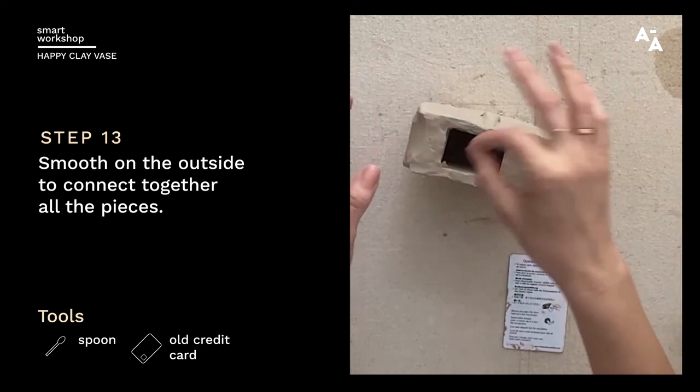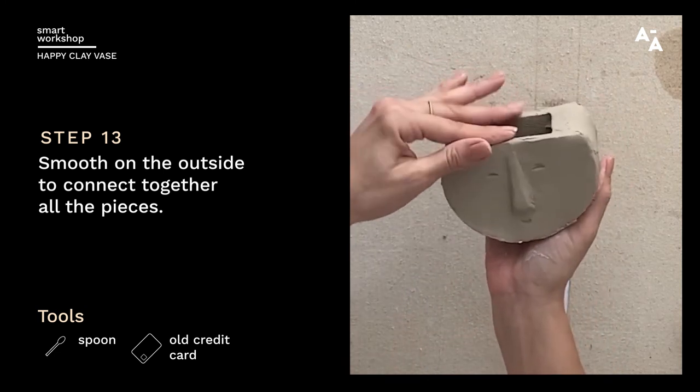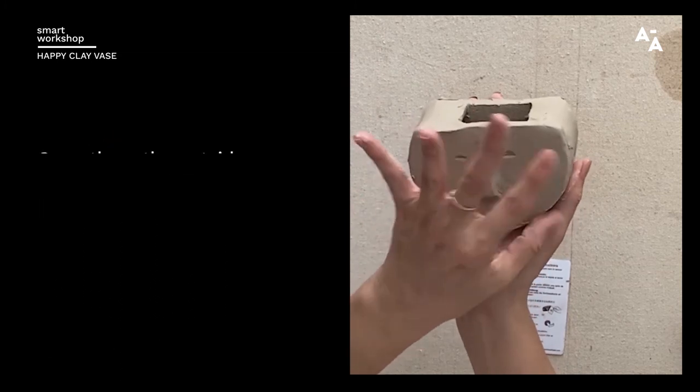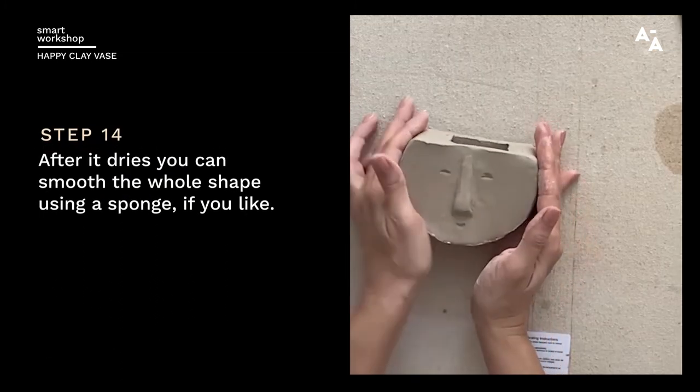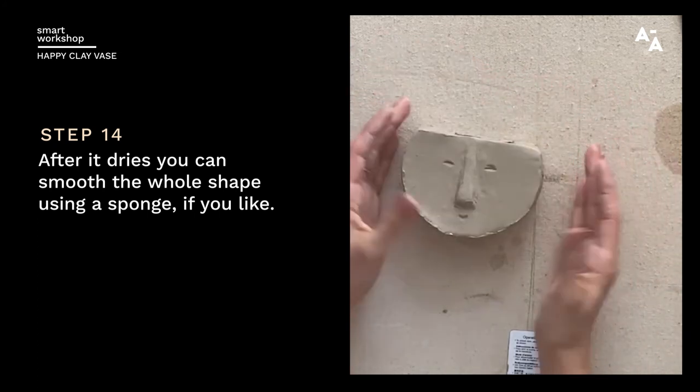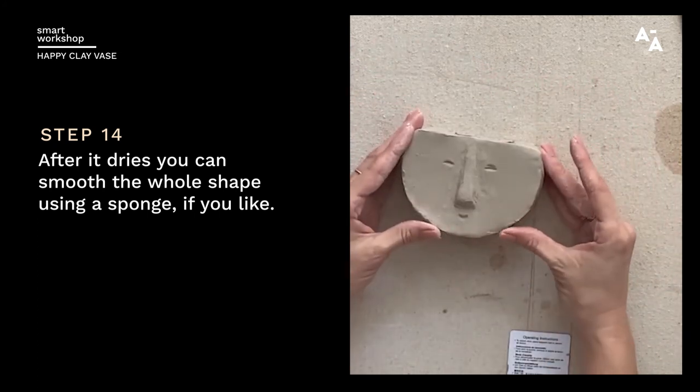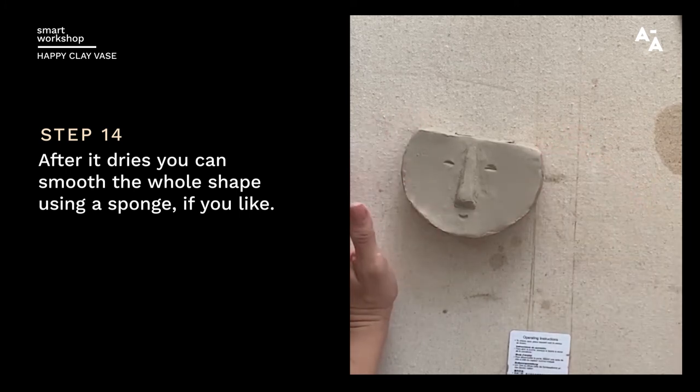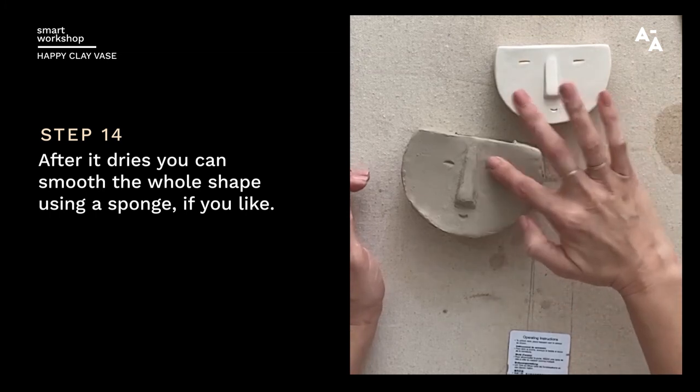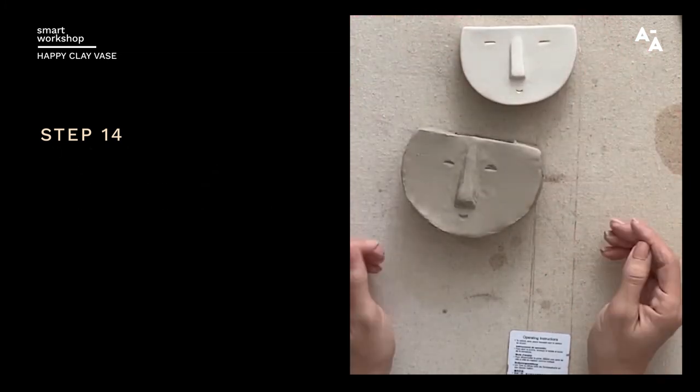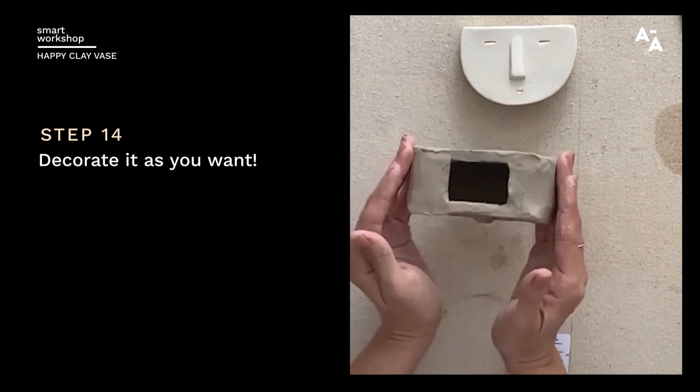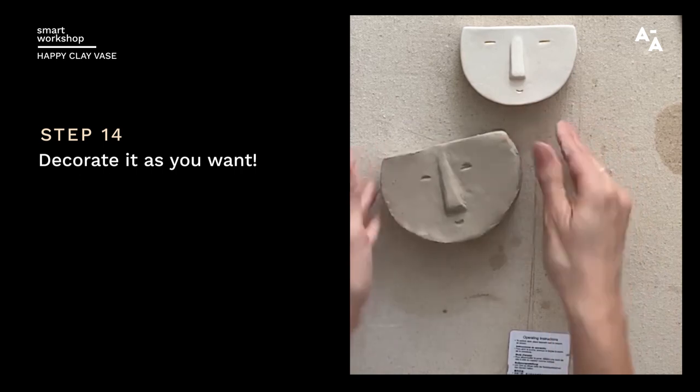And there we go. So this is where our flowers will go. You've got our cute little face. Pretty happy little guy. And after it dries, you could smooth it out with a sponge if you'd like, or leave everything as it is. And it will shrink. And this is what you'll end up with, a nice little vase. And you can glaze it or paint it however you like, or you can leave it. But I think it's a cute little guy.